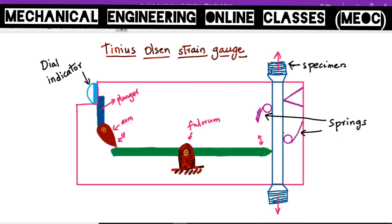This is called compound magnification because the strain is being magnified and shown at the dial indicator due to the lever and arm setup.